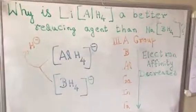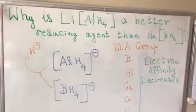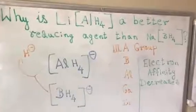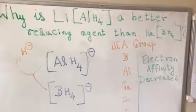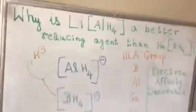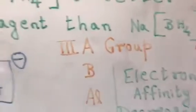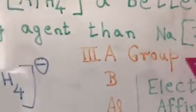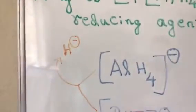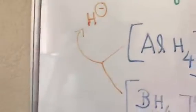Today I'm going to address this question: why is lithium aluminium hydride a better reducing agent than sodium borohydride? This is lithium aluminium hydride and this is sodium borohydride. We are going to see why this one is a better reducing agent than the other.